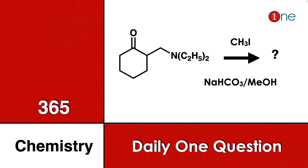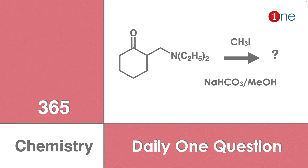Welcome to One Chemistry. This is the 365 Chemistry Series — one daily question for you. Here, cyclohexane has a secondary amine attached with two ethyl groups, reacting with methyl iodide and sodium bicarbonate in methanol. You have to find the final product.